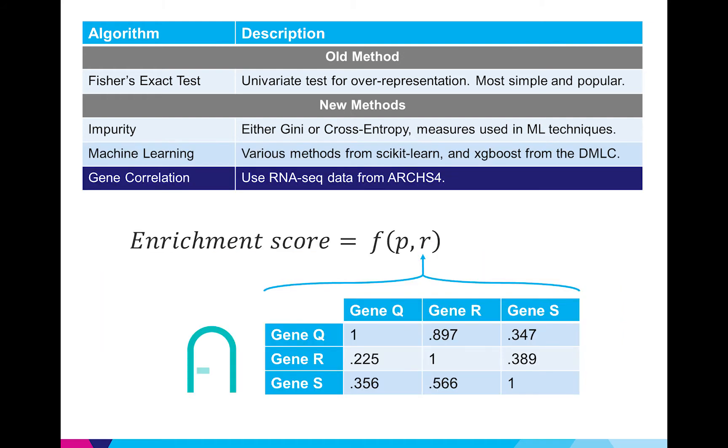Finally I returned to the Fisher's exact test but this time added the second variable of an aggregated correlation score between the two gene sets so I would reward the gene set pair with high correlation between each other.